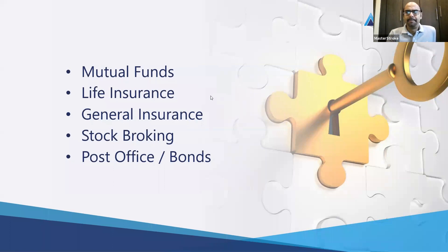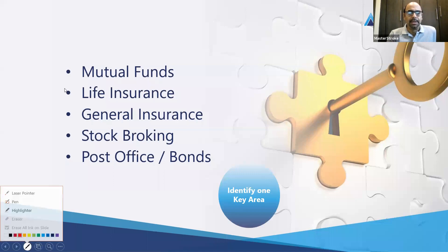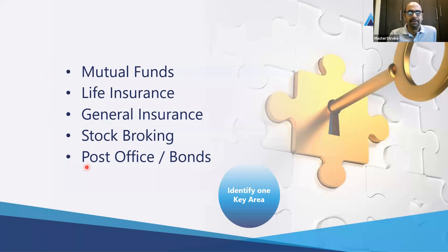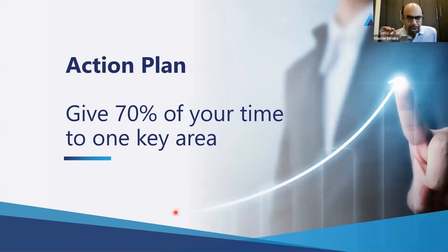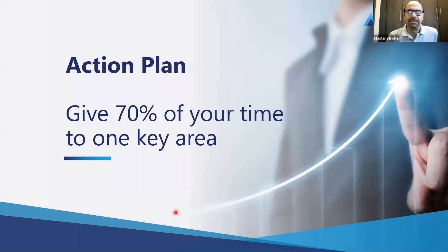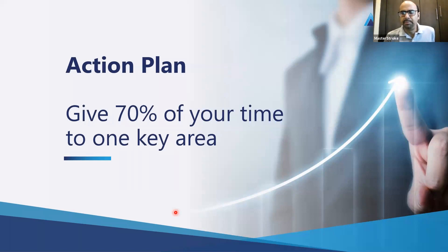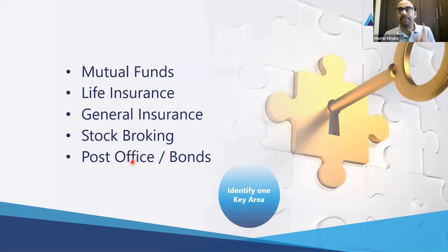You have to choose one option, and that option has to represent 70 percent of your business. All these options are available to you, and you have to choose between them. Give 70 percent of your time to one key area. You have to decide one single product out of these products where you give 70 percent of your time.